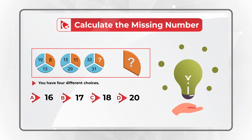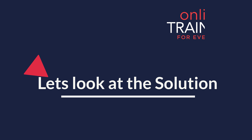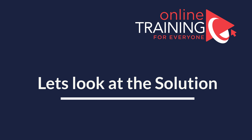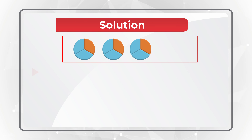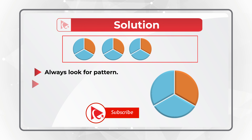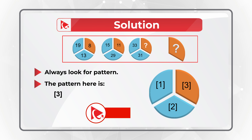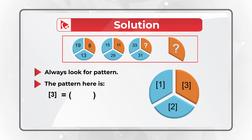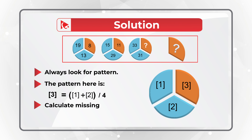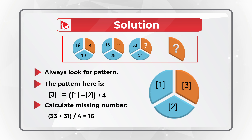Did you calculate the right answer? The solution to this problem is really interesting. You need to always look for patterns to solve these types of problems. The pattern here is that section 3 of the circle is calculated as sections 1 plus 2 divided by 4. So to calculate the missing number, you need to add 33 plus 31 and then divide the sum by 4, which gives you the result of 16.